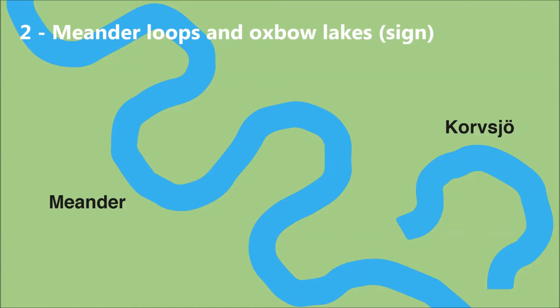Meandering is caused by the water flowing at different speeds in different parts of the watercourse. The velocity of water is greater in the outside curve of a meander, causing erosion — the water carries away soil from the riverbank. On the inside of the curve, however, the water flow is slower and soil and silt is deposited. This process is called sedimentation.